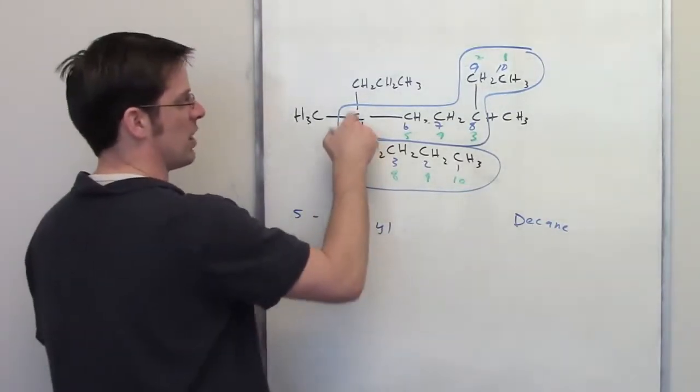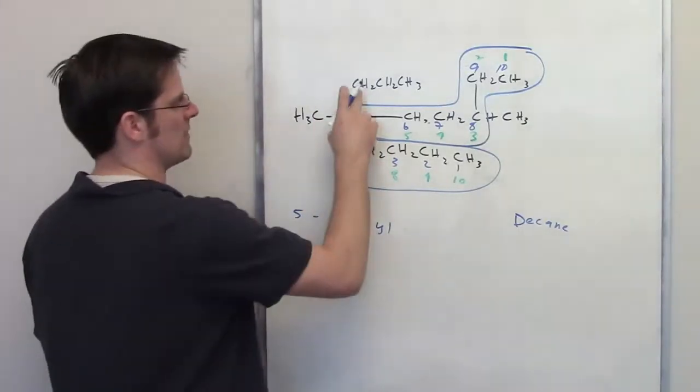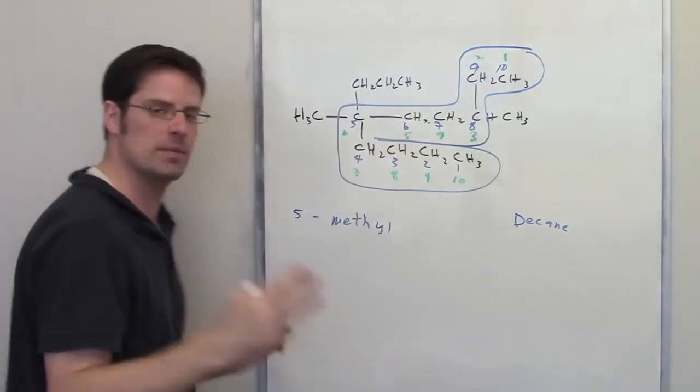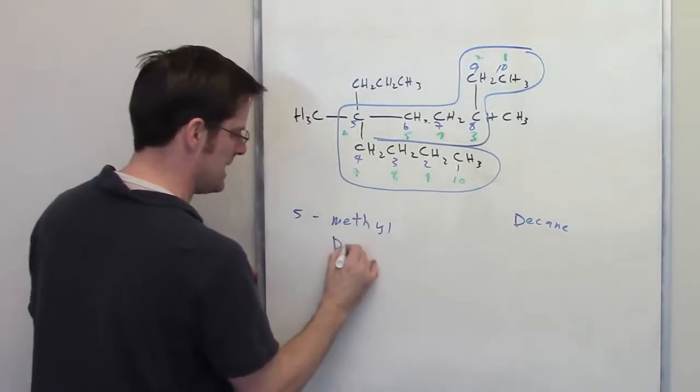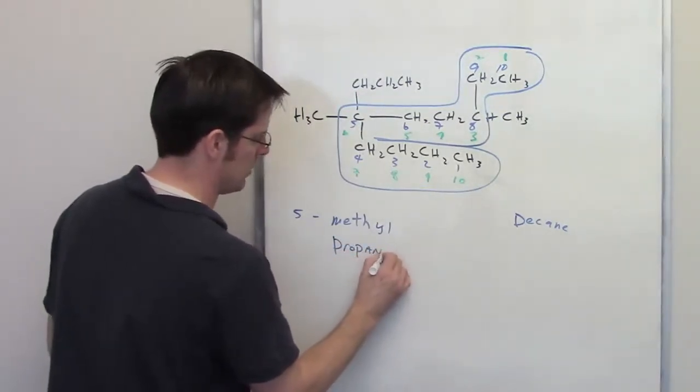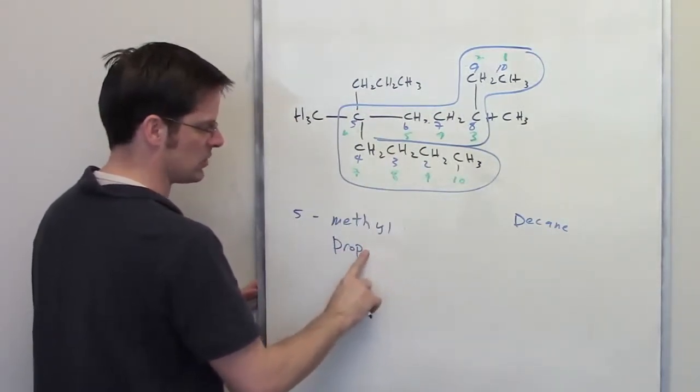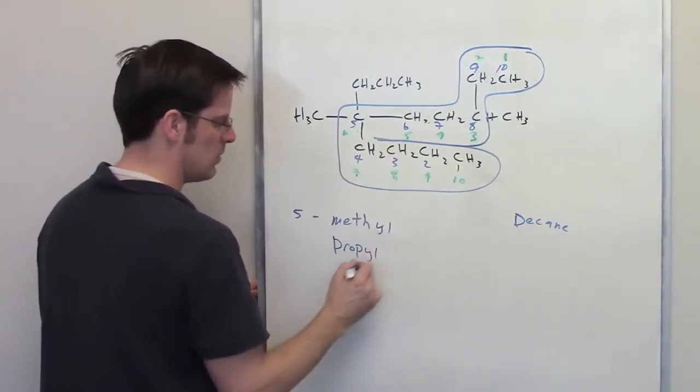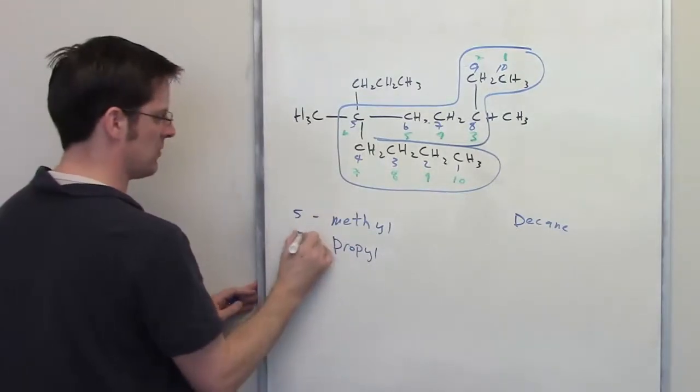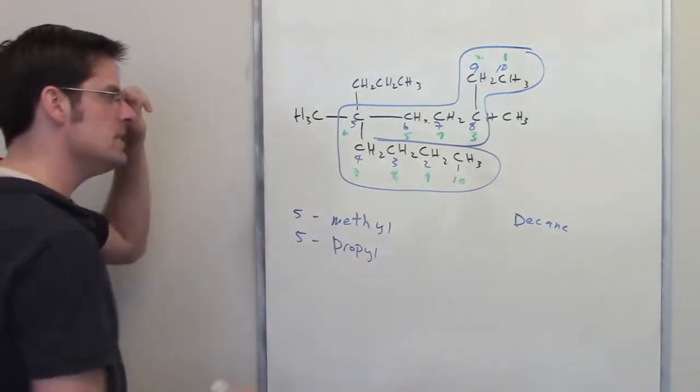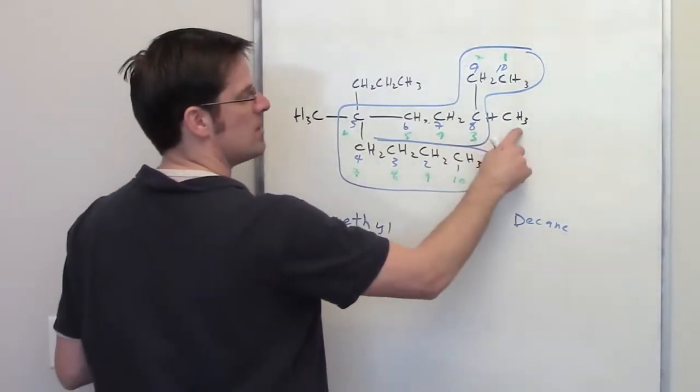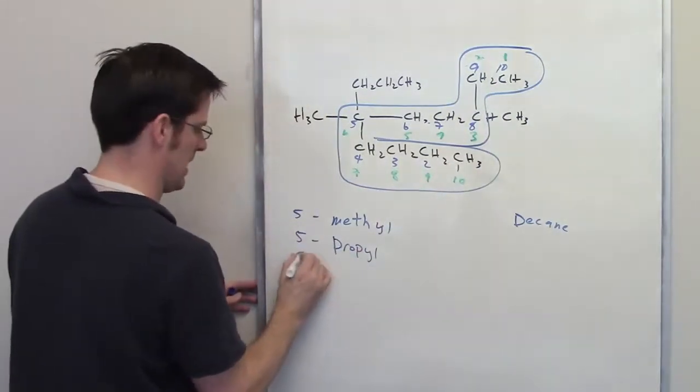Now also coming off of carbon 5, blue notation, I've got a 3-carbon long chain. 3-carbon long chain is called propane. However, this is not a regular propane. It's a propane dangling off of a parent chain, which means it's a substituent. So I replace the suffix "-ane" with "-yl". So coming off of carbon 5, we've got propyl. Coming off of carbon 8, I have another methyl group. So I would go ahead and write down 8-methyl.